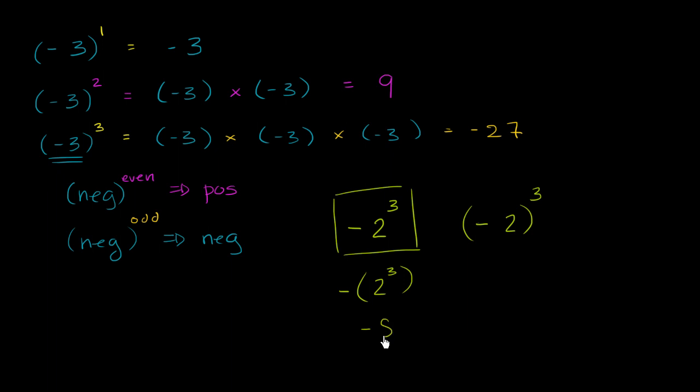This is implicitly saying negative 1 times 2 to the third power. So many times, this will usually be interpreted as negative 2 to the third power, which is equal to negative 8, while this is going to be interpreted as negative 2 to the third power. Now that also is equal to negative 8, and you might say, well, what's the big deal here?